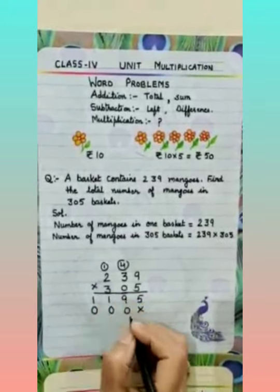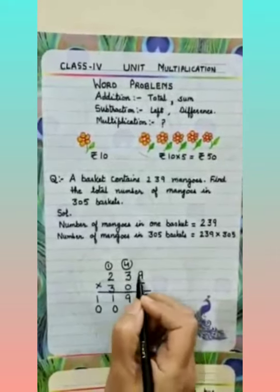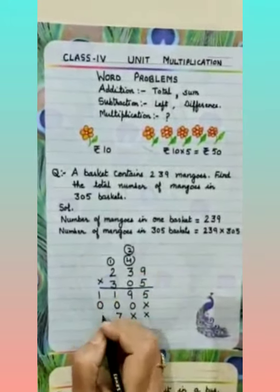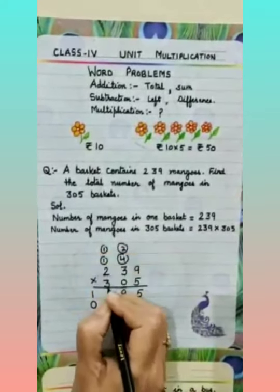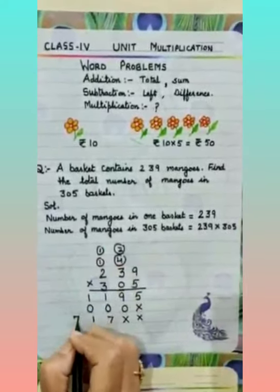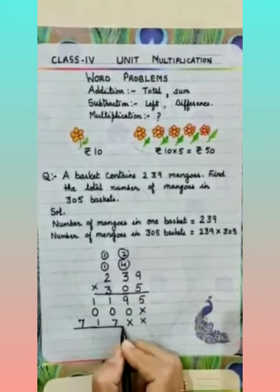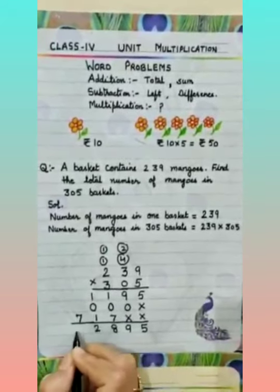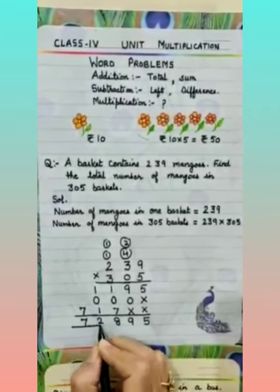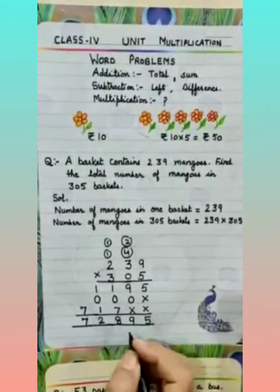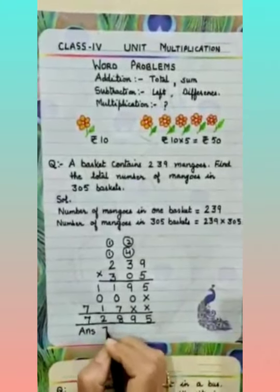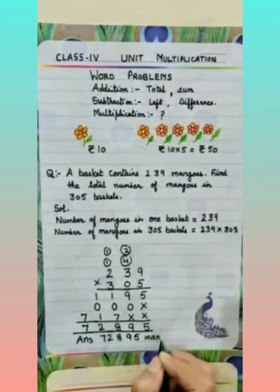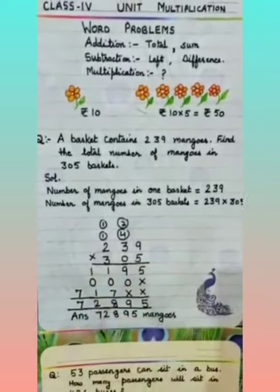Now the next number is at the hundreds place, so put 2 crosses. 3 nines are 27, 2 carry. 3 threes are 9 plus 2 is 11, 1 carry. 3 twos are 6 plus 1 is 7. Now do the addition. The digits are 5, 9, 8, 2, 7. This is the answer: 72,895 mangoes in 305 baskets.